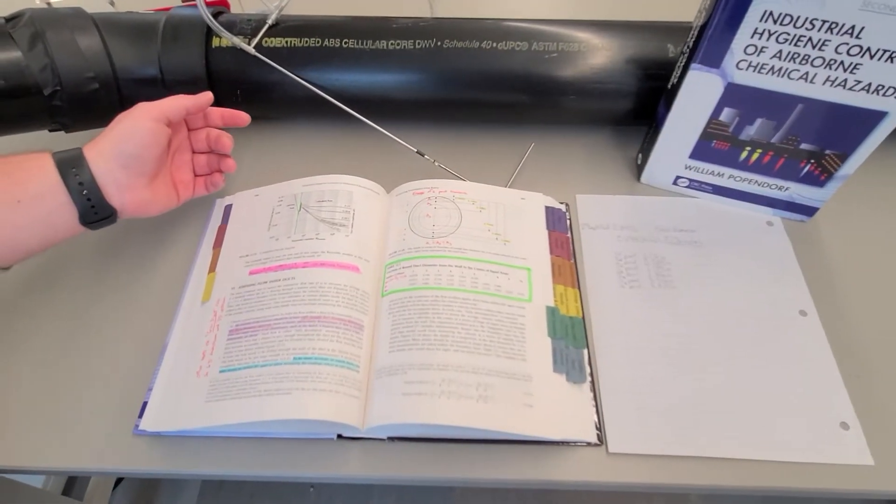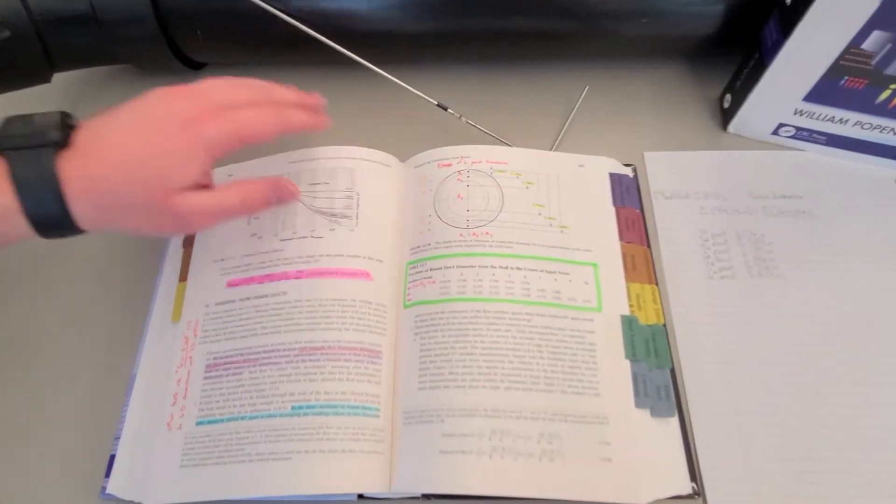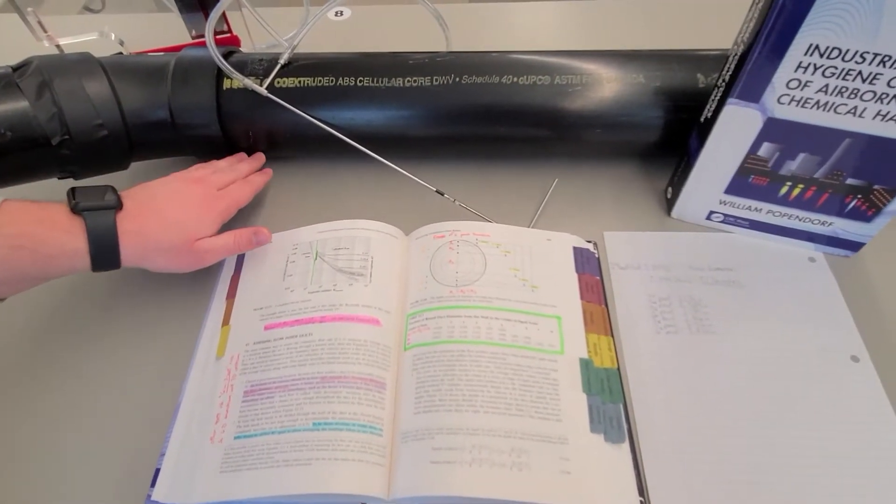Today we're going to discuss how to do a duct traverse. The main goal of a duct traverse is to find the average velocity of airflow across a duct.